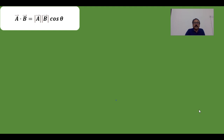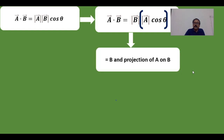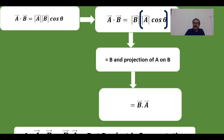We know that A·B = AB cos theta. I can rearrange this as B times A cos theta, which means taking vector B and then the projection of A onto B. We began with A·B and concluded it equals B·A. Therefore, the dot product is commutative.